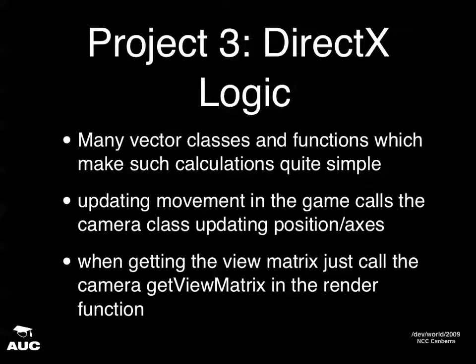When you store the position inside your camera class, you reference everything to your camera. In OpenGL you translate the position of vectors back to the origin and rotate around it. Every time the render loop runs, the view matrix is calculated based on your look direction, right direction, and up direction, and that's sent to the view matrix used to render information to your screen.